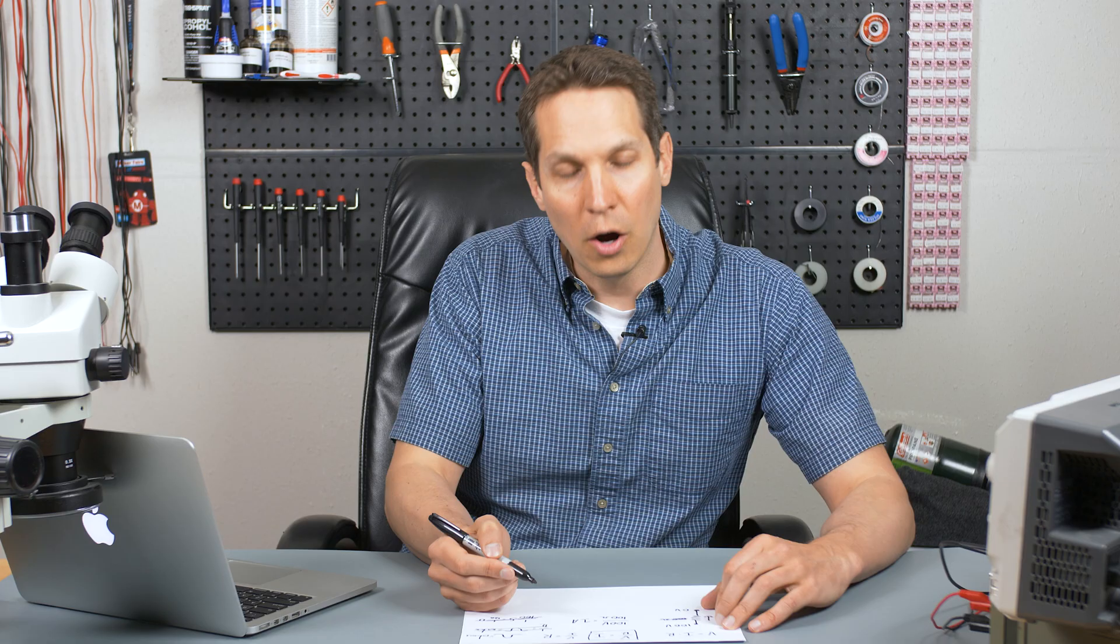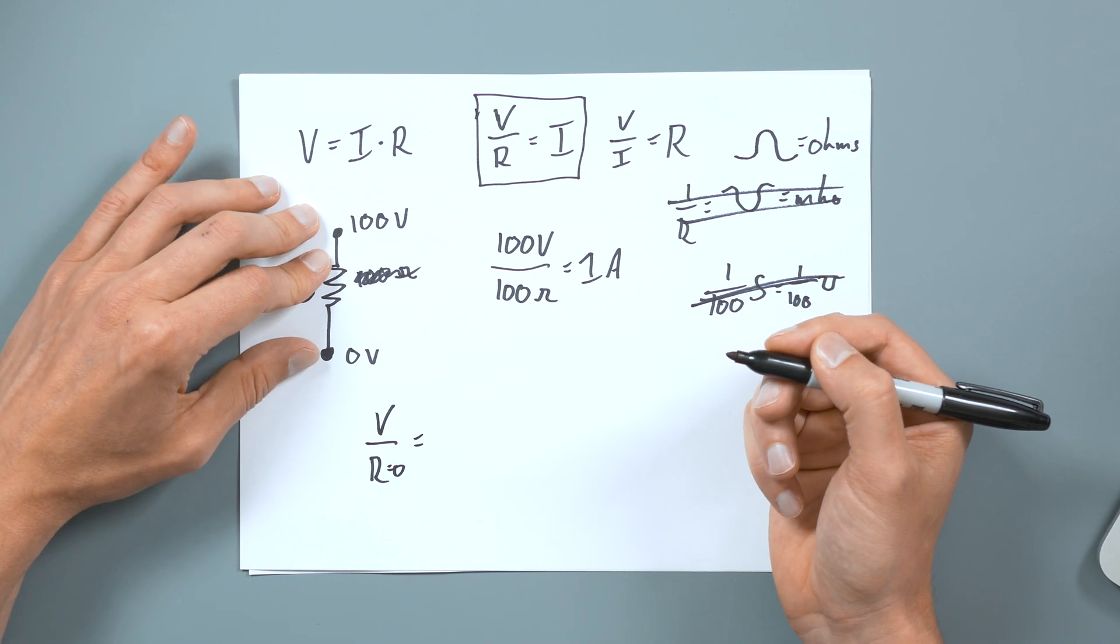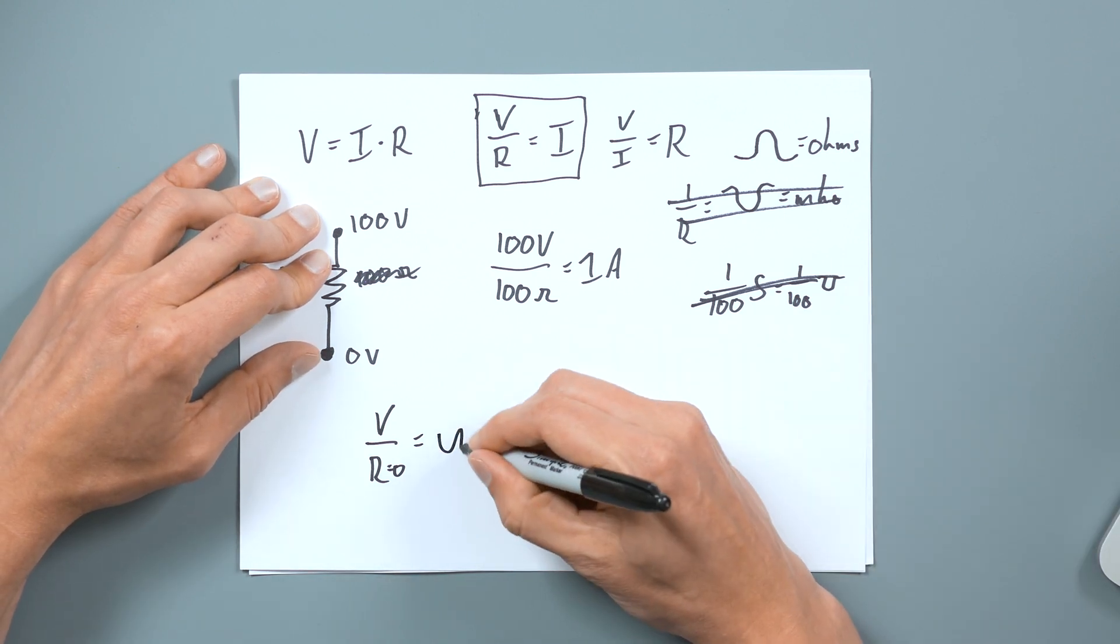So if you have V equals IR, imagine your R is zero. So you have V over R, which equals zero. What does that come out to be? V comes out to be infinity. And that is called a short circuit.